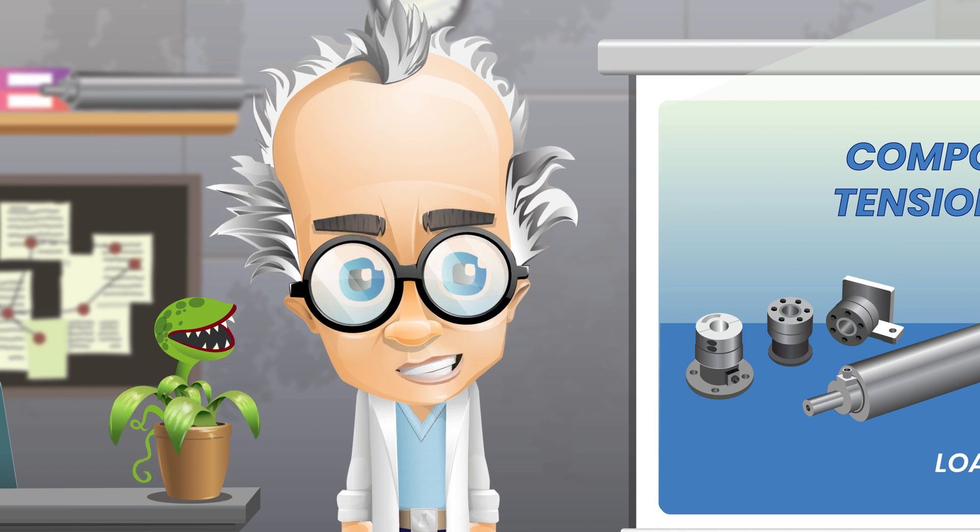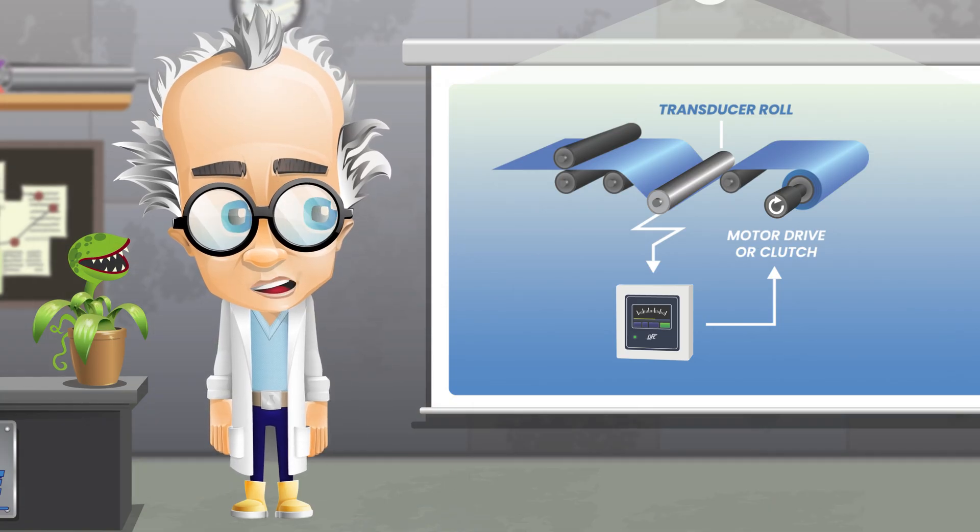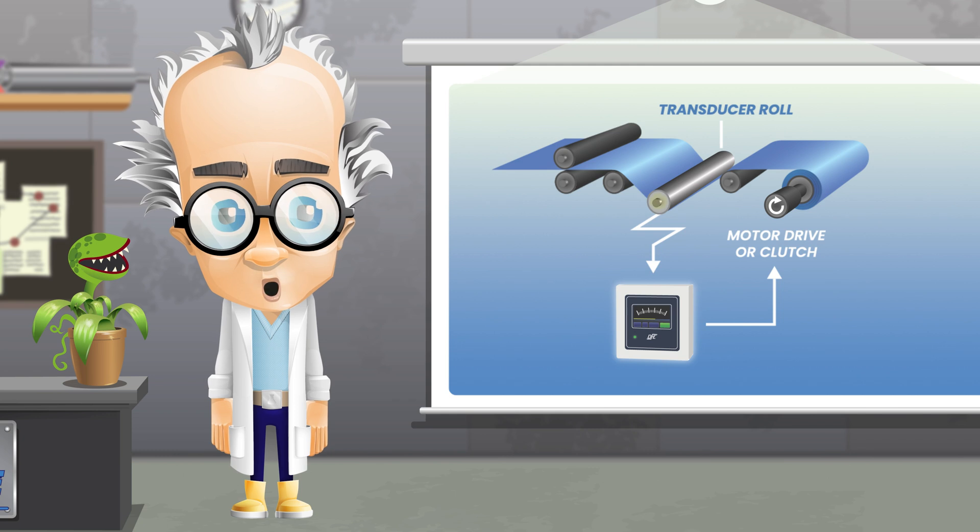You can't stop the signal, Mal. Load cell signals are input into a tension controller to enable closed-loop tension control.